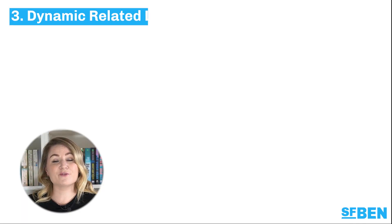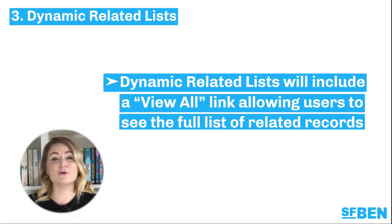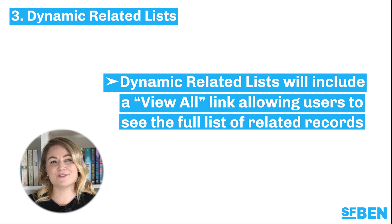Dynamic Related Lists were an amazing new feature in 2022, but unfortunately missing a critical piece of functionality: the ability to view all records in a related list. From Spring 23, Dynamic Related Lists will include a View All link so that users can navigate to see the full list of related records.